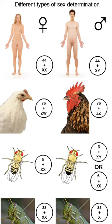In typical XX embryos, cells secrete estrogen, which drives the body toward the female pathway. In Y-centered sex determination, the SRY gene is the main gene in determining male characteristics, but multiple genes are required to develop testes.